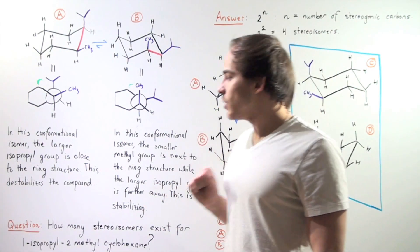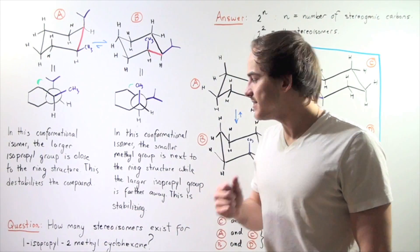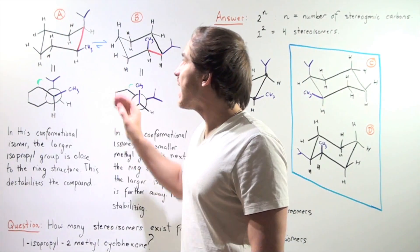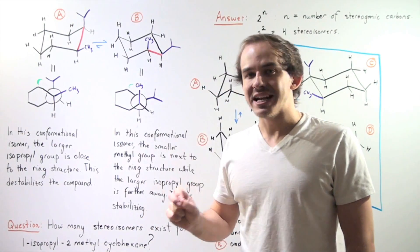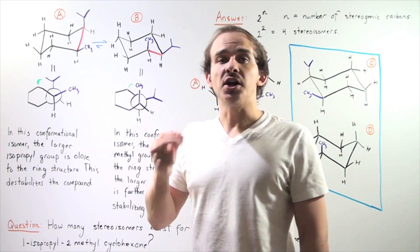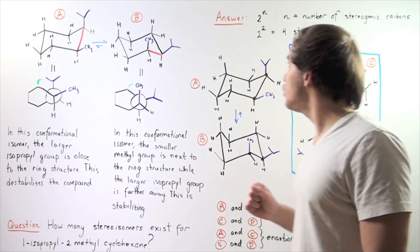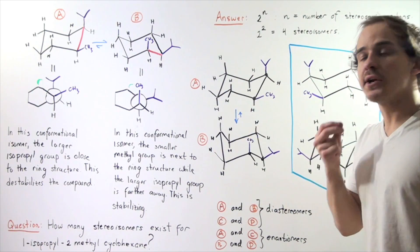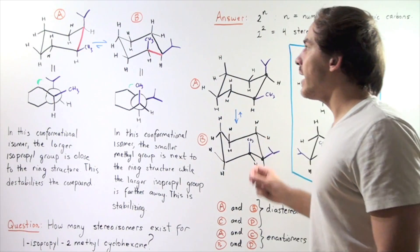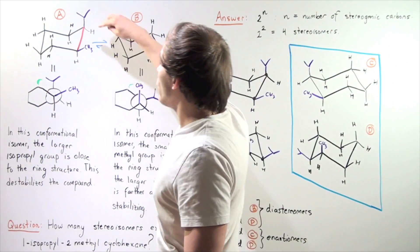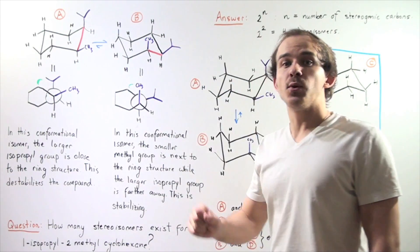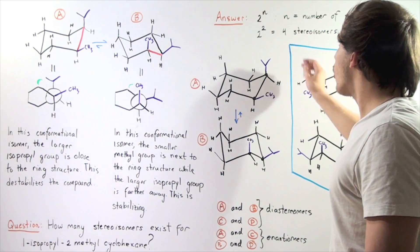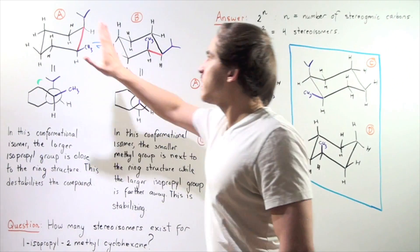Now I want to ask: how many stereoisomers exist for 1-isopropyl-2-methylcyclohexane? To figure out how many stereoisomers exist, we have to determine how many chiral or stereogenic carbons exist, and then use the formula 2 to the power n, where n is the number of chiral or stereogenic carbons. We have the first carbon and the second carbon, so we have two stereogenic carbons. With n equal to 2, 2 to the power 2 is 4, so we have 4 stereoisomers.